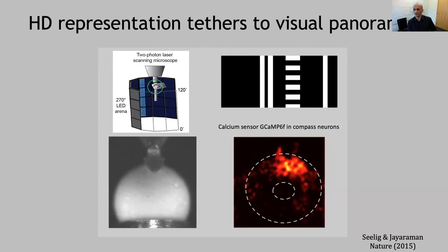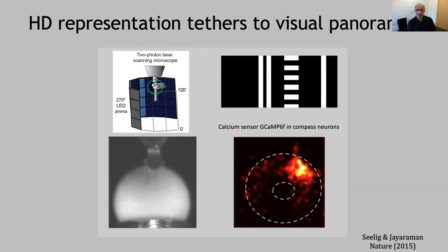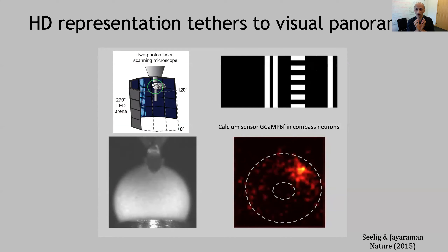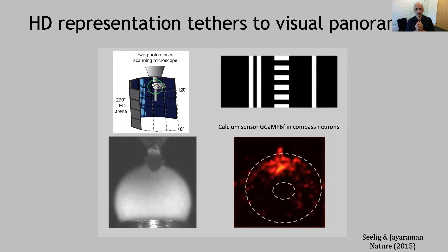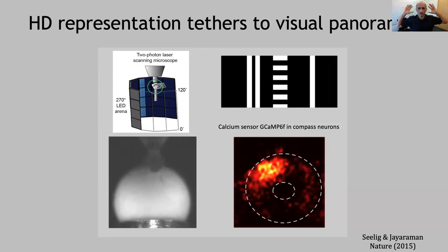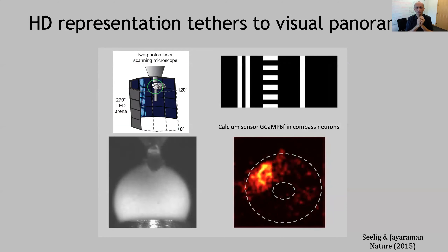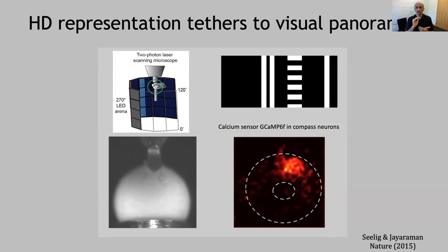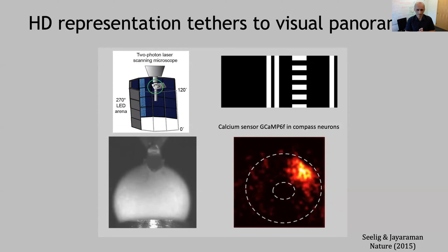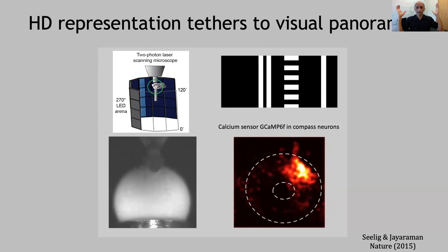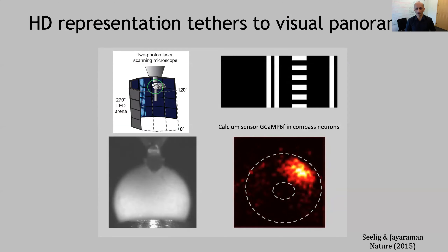Now I'm going to switch gears. This particular network also works with visual inputs, not just in darkness. The fly is now embedded in a VR arena that surrounds it with visual features on the arena. As you can see, the bump locks to them just fine — the correlations are often literally one. You should imagine this as surrounding the fly, not just a flat plate in front — that's just for convenience.